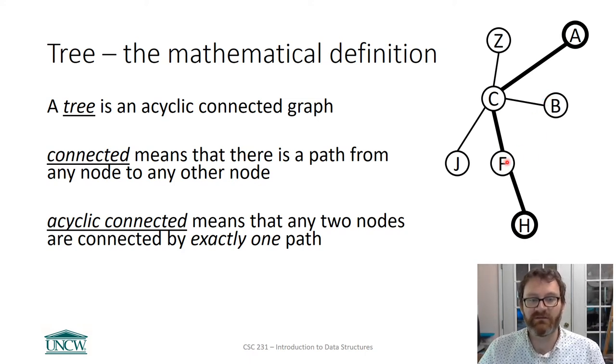Acyclic means there's a, every node is connected, or any two nodes are connected by exactly one path. So C is kind of the nexus of this tree here, of this graph. And almost all paths go through C.